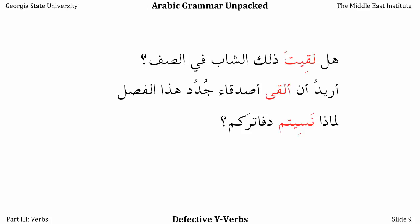We can use a different verb, nasiyah, 'to forget.' Limadha nasitum dafatarakum? — Why did you forget your notebooks? Or la nureed an nansa al-tadhaakir — we don't want to forget the tickets. All three verbs — baqiyah, laqiyah, and nasiyah — have the same pattern: the defective Y verb pattern.